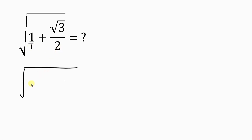So I'll be writing all over 2, which is the LCM. So 2 divided by 1, I have 2. 2 times 1 is 2. Plus, now 2 divided by 2, I have 1. Now 1 times root 3 is root 3.